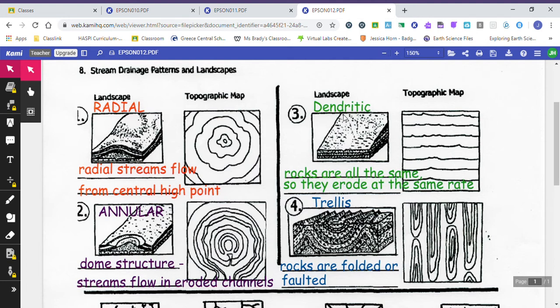A dendritic landscape. This is when rocks are all the same, so they're going to erode away at the same rate. If you're looking at a topographic map, the contour lines would look like this. Pretty non-exciting, but this just shows that it's a consistent change in elevation. There's not a huge mountain here, there's not a big plateau. This is typical of a plains landscape.